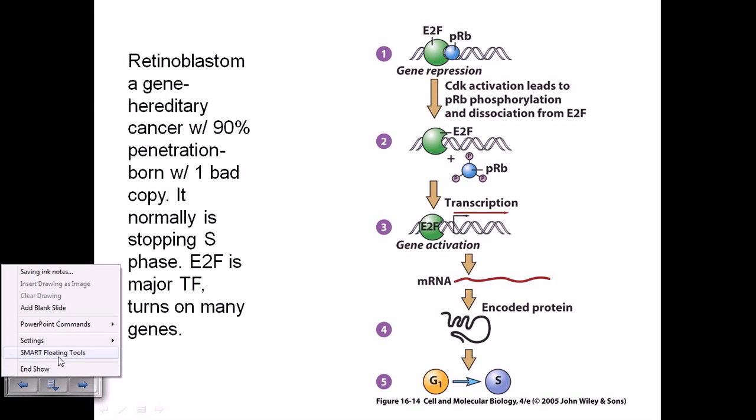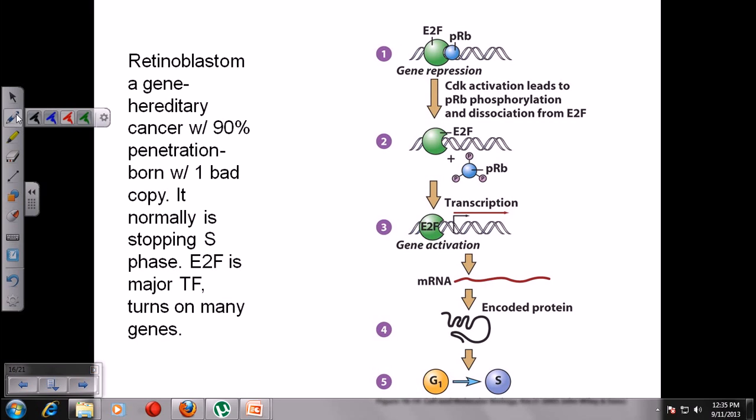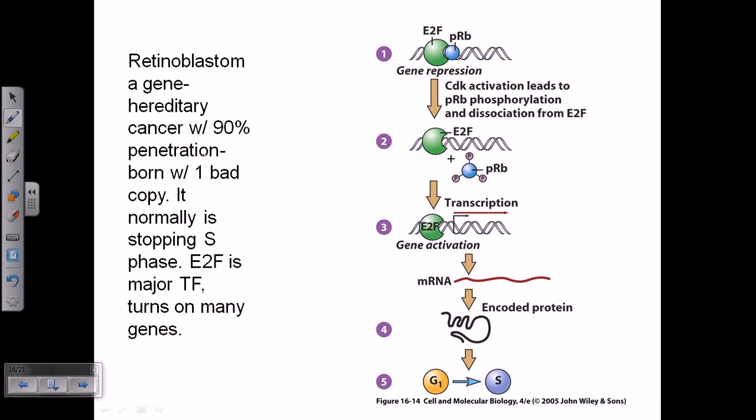Now what happens in this case, we are going to see the genetic level process during the transcription or expression of the protein. Now here it is the DNA and onto the DNA two proteins, E2F and PRB. Now this retinoblastoma protein is caught by this E2F. So E2F attaches with retinoblastoma protein to make a complex.